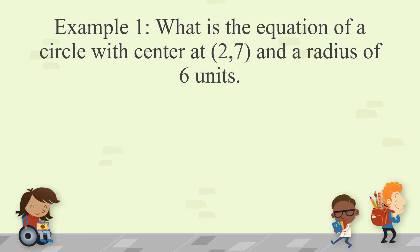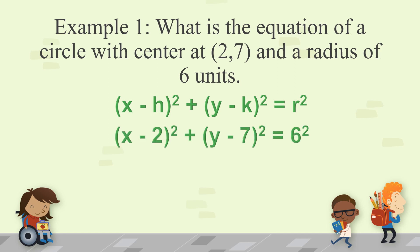Remember that your center is at (2, 7), meaning it is not at the center of the Cartesian plane, and the radius is 6 units. Substituting into the equation, since the center is (2, 7), h is 2 and k is 7, and r is 6. You get x minus 2 squared plus y minus 7 squared is equal to 6 squared, which simplifies to x minus 2 squared plus y minus 7 squared is equal to 36. This is the equation of the circle.